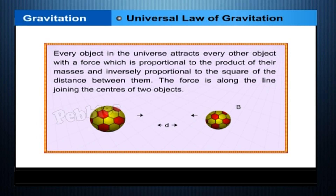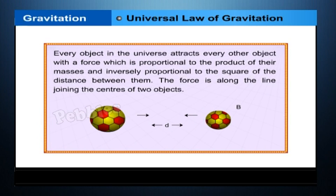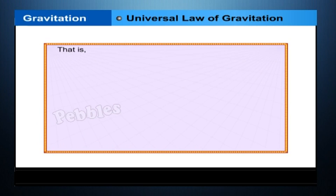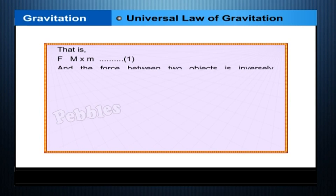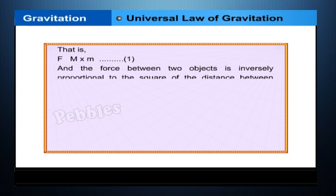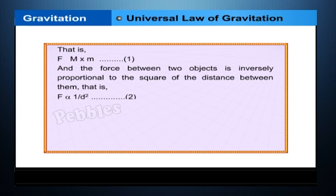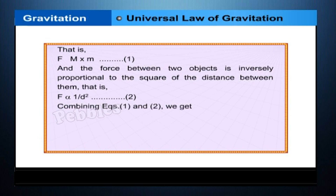According to the universal law of gravitation, the force between two objects is directly proportional to the product of their masses, that is F = M × m. The derivation for the universal gravitational constant G is obtained as shown.